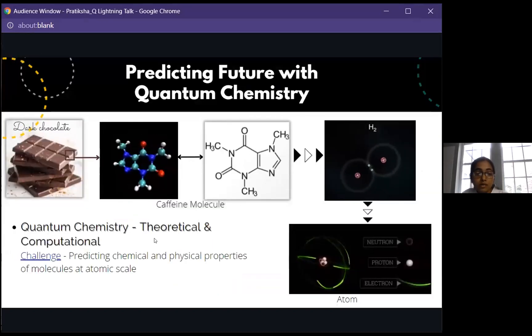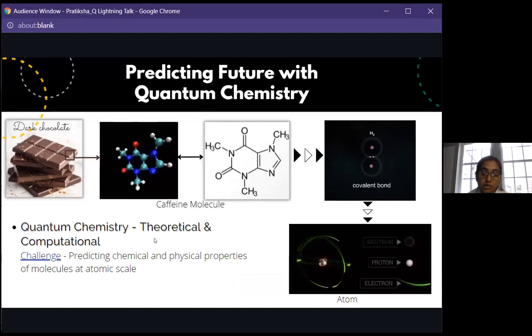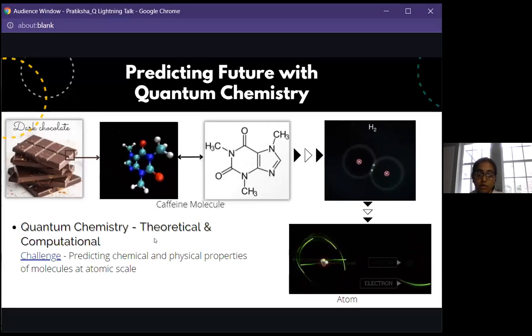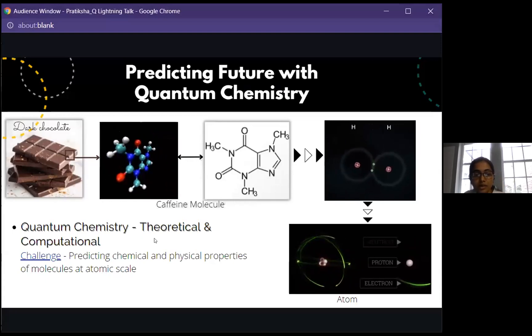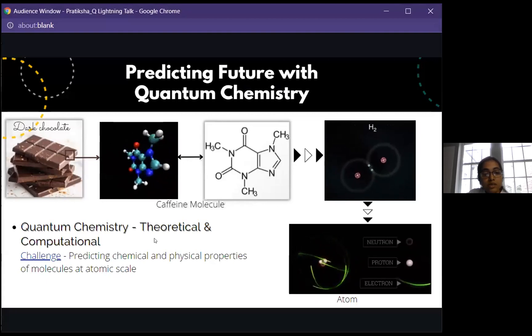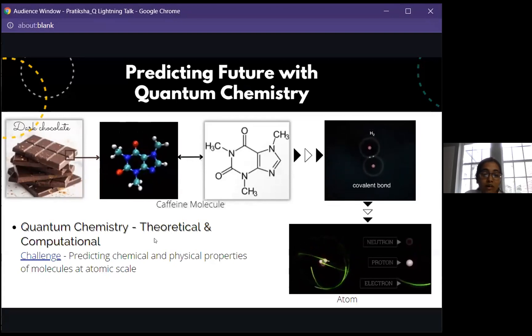To talk more about my research work I would like to begin with chemistry in nature. You can find chemistry all around you and also inside yourself. For example we breathe, we intake oxygen and our body uses that oxygen to react it with glucose and produce more energy for ourselves. How is this chemistry related to the quantum world? Let's talk about dark chocolate because I love dark chocolate. It contains so many caffeine molecules.